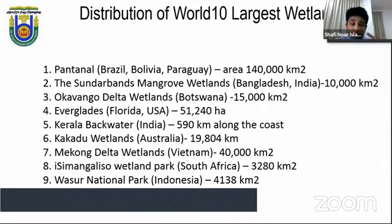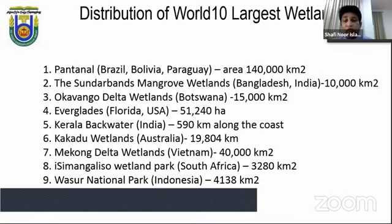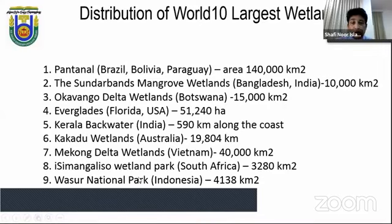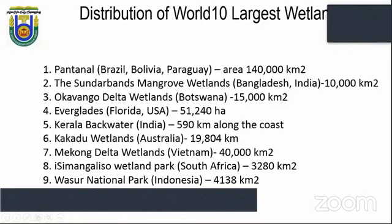The 10 major wetlands of the world include the Pantanal — the largest wetland at 140,000 square kilometers, dominating Brazil, Bolivia and Paraguay — the Sundarbans mangrove wetlands covering 10,000 square kilometers across India and Bangladesh, the Okavango Delta in Botswana, the Everglades in Florida, Kerala Blackwater in India, Kakadu wetlands in Australia, Mekong Delta wetlands in Vietnam, and iSimangaliso Park in South Africa, among others.